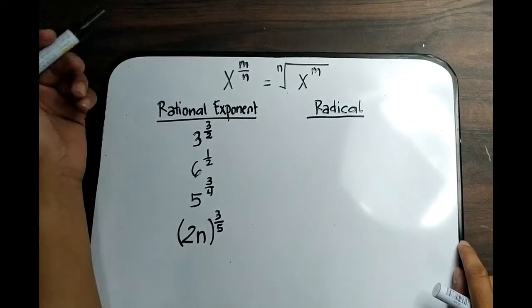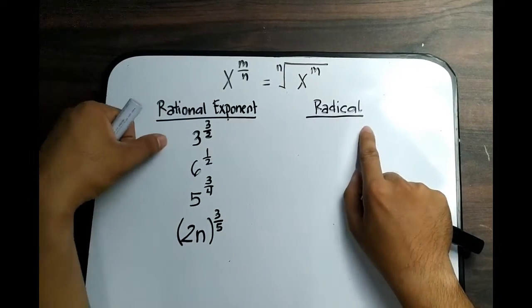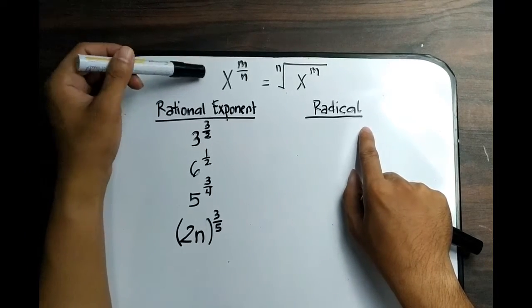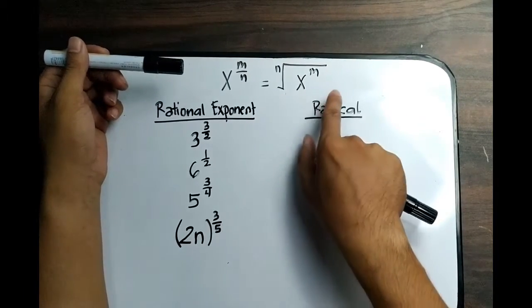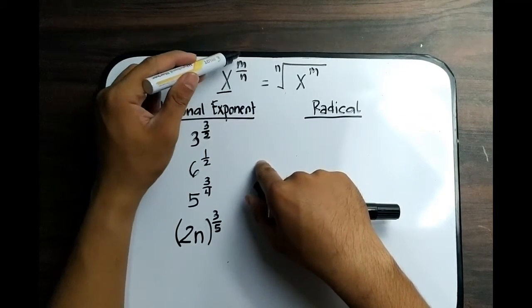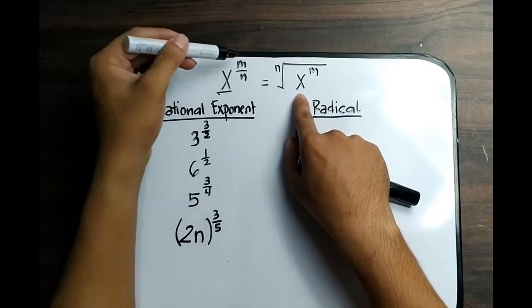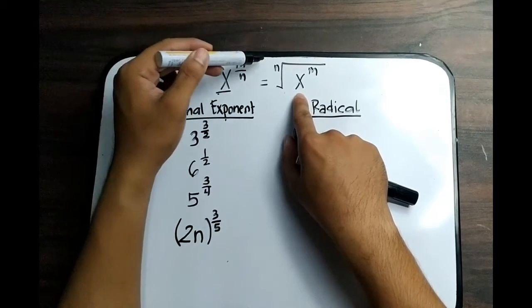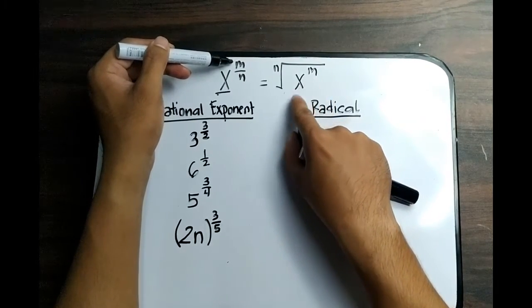Now let's have the conversion from rational exponents to radical expressions. I have four different examples, and this is the pattern: x raised to m all over n is equal to the nth root of x raised to m. The base becomes the radicand, the denominator n becomes the index, and the numerator m becomes the exponent of your radicand.